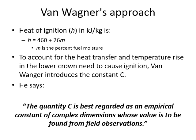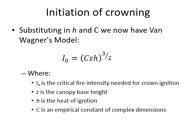Van Wagner introduces a constant c to account for both heat transfer and the rate of temperature rise required to cause ignition. He defines the quantity c as best regarded as an empirical constant of complex dimensions — all the heat transfer and temperature rise are built into this one number — and its value needs to be found from observation. Sticking H and c into the rearranged Thomas formula gives us Van Wagner's model: I_0 = (c · z · h)^(3/2), where I_0 is the critical intensity needed for ignition, z is canopy base height, and h is heat of ignition.